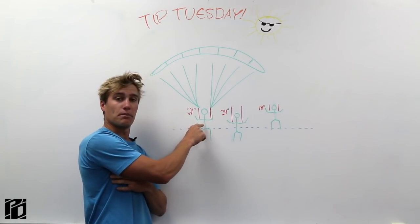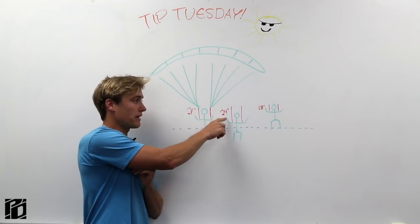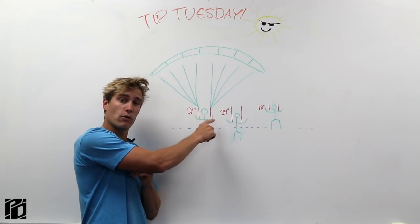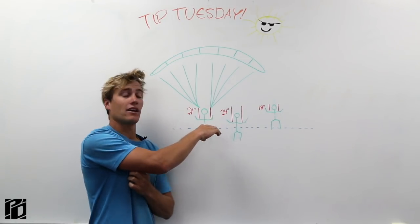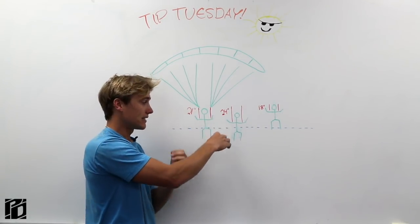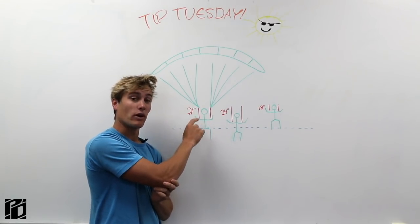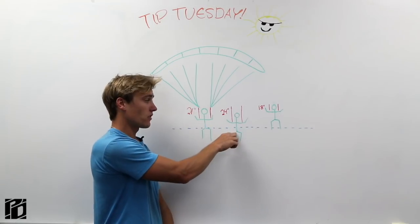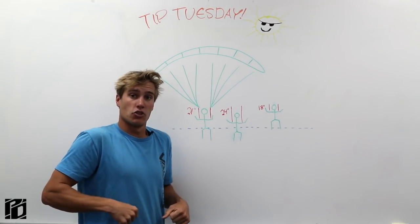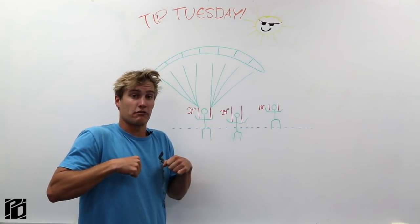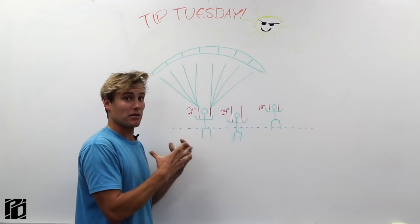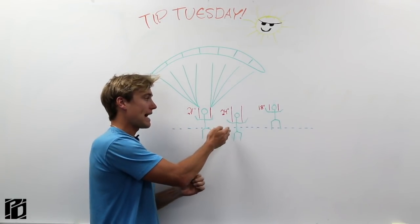Now, if this jumper lengthens their risers by three inches and puts on 24-inch risers, they're going to be sitting lower under the parachute, essentially. And thus, that same point in comparison to the 21-inch risers is going to be higher on their body. So if it was here before, it's going to be three inches higher.